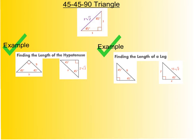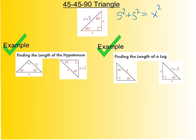I'm going to prove this using the Pythagorean theorem. I'll be using the letter S for the leg length and X for the hypotenuse. Since both legs are always the same length, I have S squared plus S squared equals X squared. Combining the left side, I get 2S squared equal to X squared.